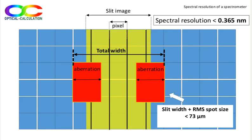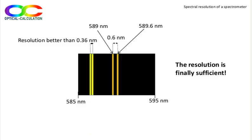By adding the RMS spot size to the width of the perfect image of the slit, we have the maximum width on the detector of any monochromatic beam in the spectral range. This width is 73 microns. According to the dispersion of the system, which is 200 microns per nanometer, a simple rule of three gives finally a spectral resolution of 0.365 nanometer. This resolution is acceptable as it is smaller than the spectral distance between the two considered emission lines of a sodium lamp.